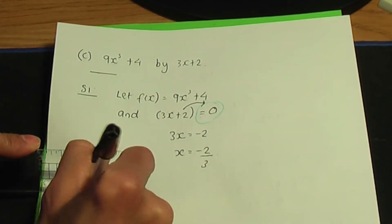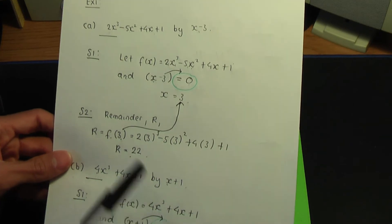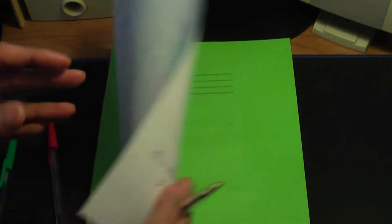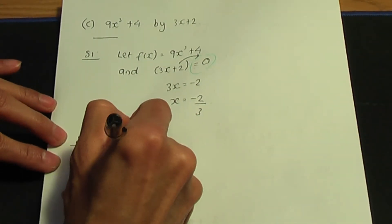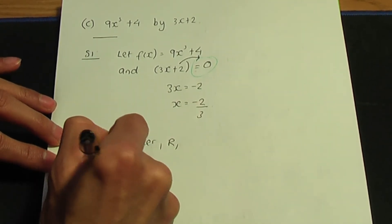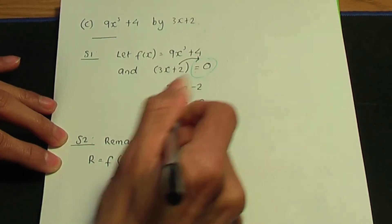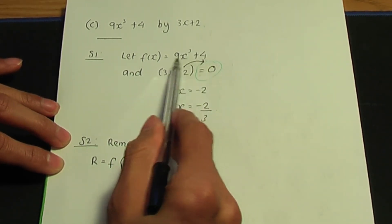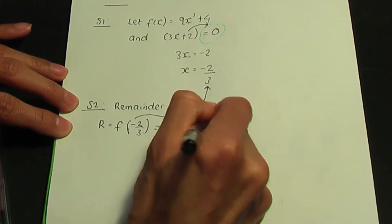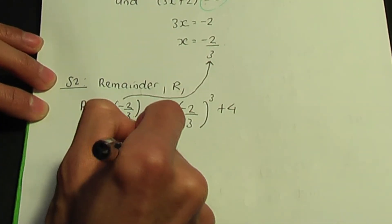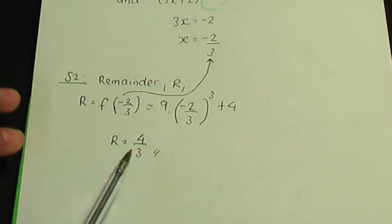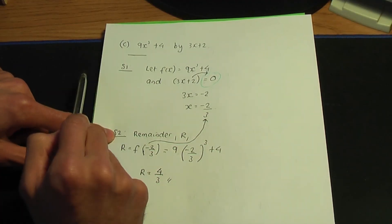That takes us to step number 2: to work out the remainder r, we need f of the value of x from step 1, which is minus 2 over 3. So we replace the x's by minus 2 over 3, giving us 9 times (−2/3) cubed, plus 4. The calculation is straightforward; as a fraction you should get 4 over 3. So that is the remainder when you divide the polynomial in part C by the linear.